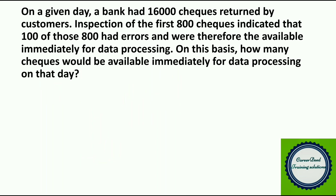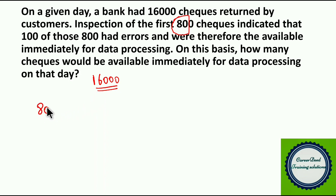Moving to question number 7. On a given day, a bank had 16,000 checks written by customers. Inspection of the first 800 checks indicated that 100 of those 800 had errors and were not available for data processing. On this basis, how many checks would be available immediately for data processing? Out of 800 checks, 100 had errors, so 700 are available. We use this ratio to find how many of the 16,000 are available.